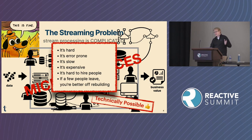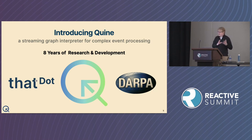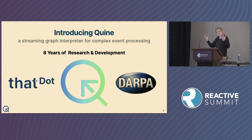Eight years ago, this was the motivation for trying to do something better, something bigger. So we started the project now called Quine. It's currently run by the team at That. We had major support from DARPA along the way for doing a lot of core research and development, applying it to some really hard cybersecurity problems for the Department of Defense. Quine is a streaming graph interpreter for complex event processing — it feels like a graph database, but it's a graph interpreter for high-volume stream processing.